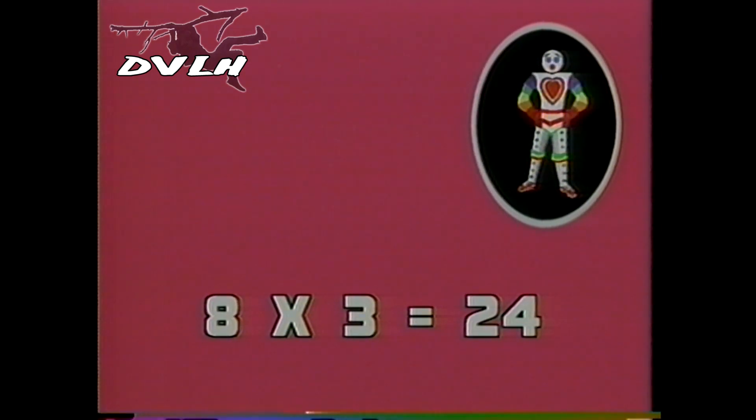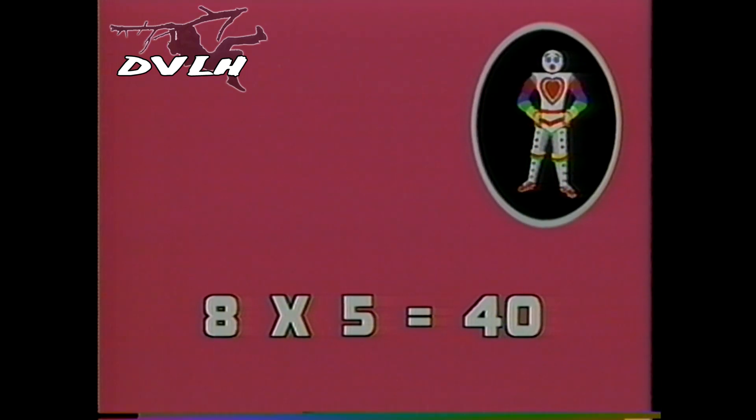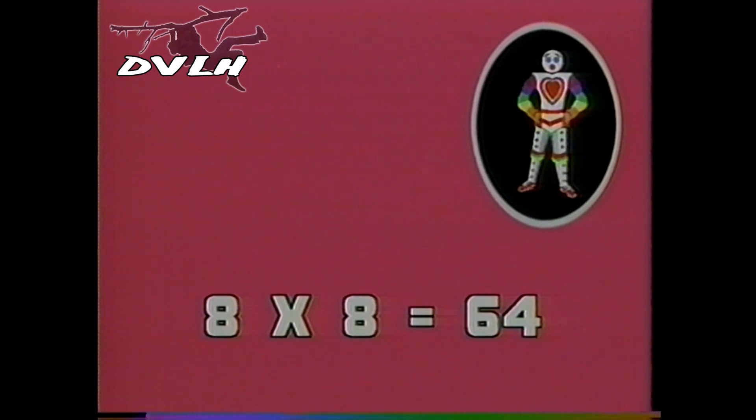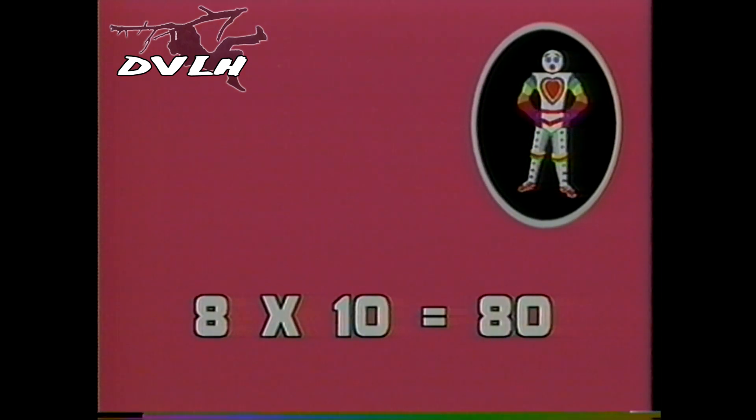One, two, three, four. Eight times one is eight. Eight times two, sixteen. Eight times three is twenty-four. And eight times four is thirty-two. Eight times five is forty. And eight times six is forty-eight. Eight times seven is fifty-six. And eight times eight is sixty-four. Eight times nine is seventy-two. And eight times ten is eighty. Eight times eleven is eighty-eight. And eight times twelve is ninety-six.